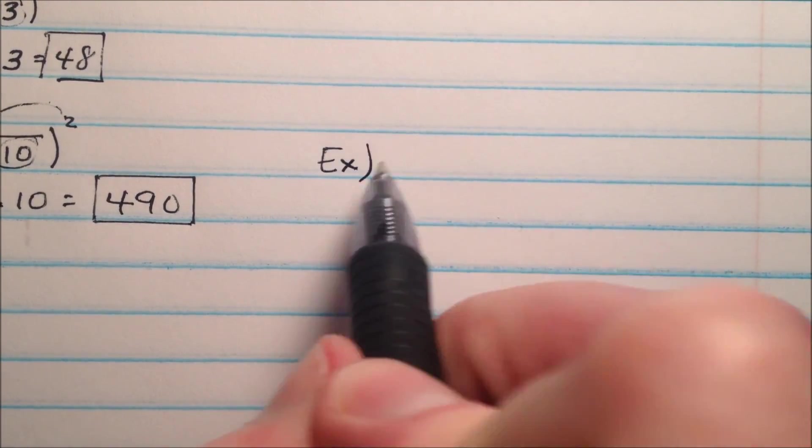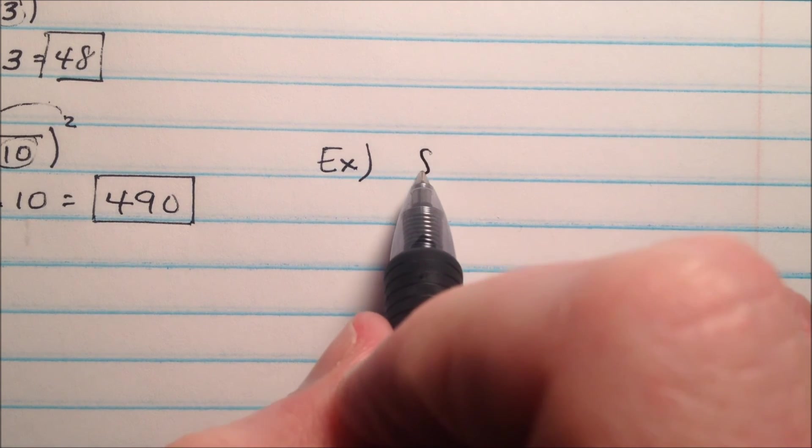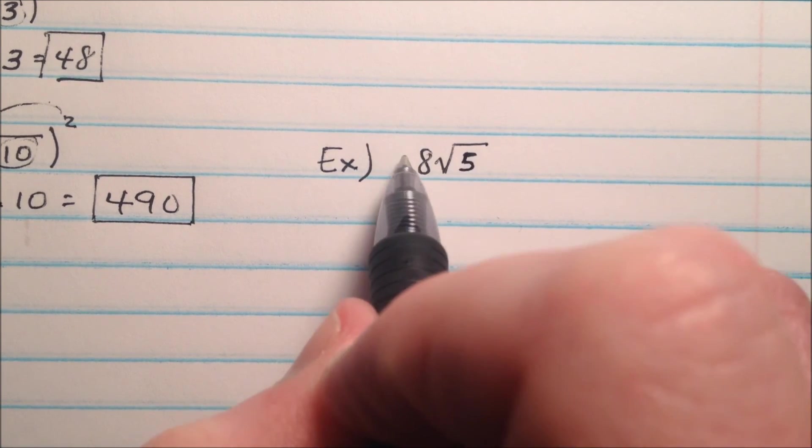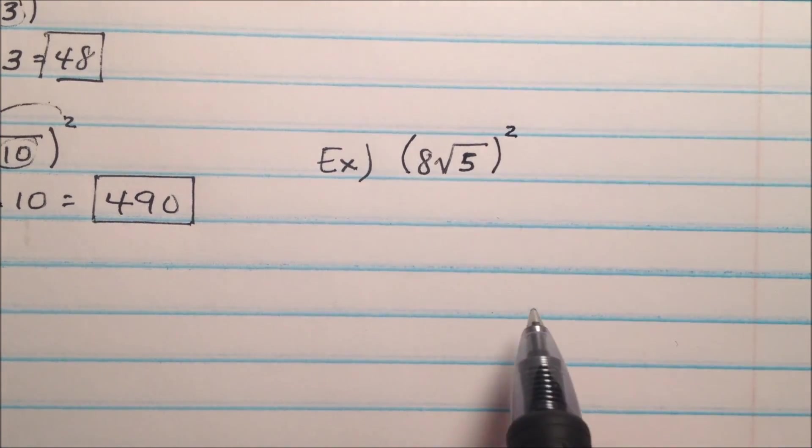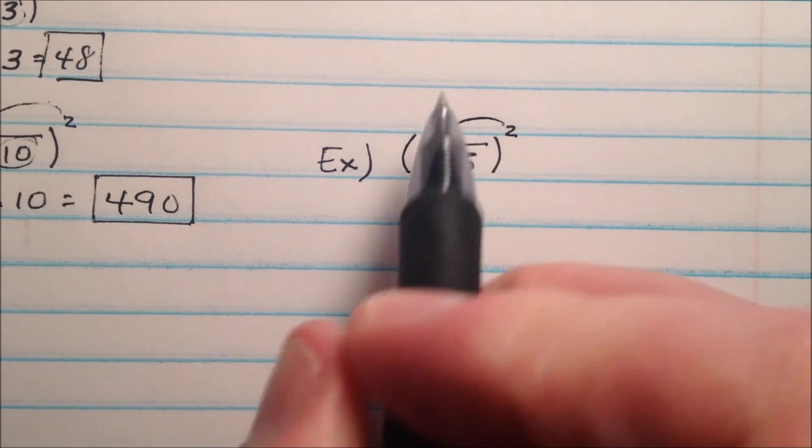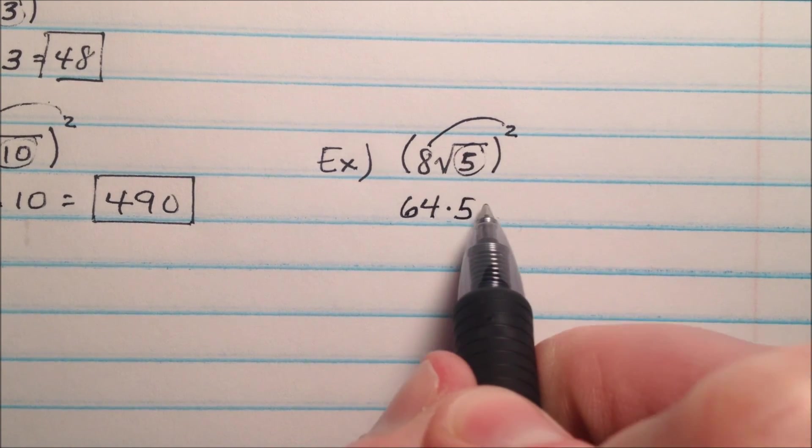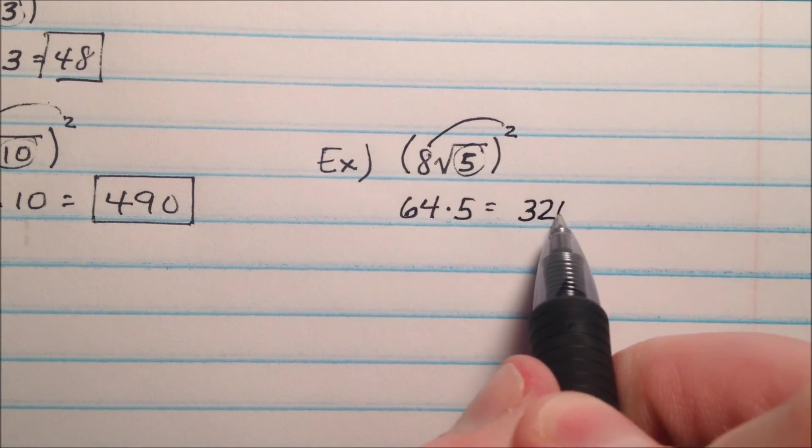Okay, let's slide over and do one more. If we have 8 times the square root of 5, and we're going to square this, 8 squared is 64 times the number inside the radical, 5, and that will be 320.